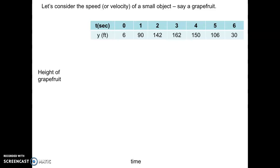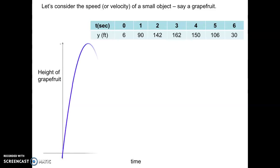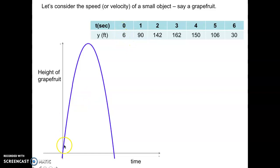Many years ago I took one of my calculus classes outside to the parking lot. One of my baseball players threw a grapefruit up into the air, and one of my other students tracked it with a tracking gun from the physics department that tracks height in feet. We got the data from one to six seconds, where t is in seconds and y is in feet above the ground. The height of the grapefruit started at six feet, went up to its peak, and then came back down again.